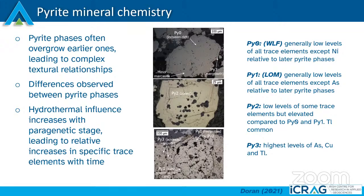In Pyrite 2 and 3 we start to see increases in trace element concentrations of arsenic, nickel and copper, but really interestingly is the relationship of thallium in these later deposits — especially as we go into Pyrite 3.